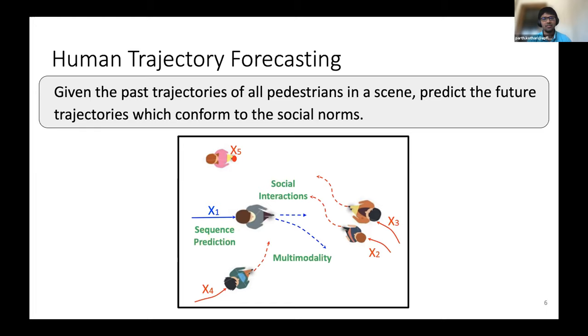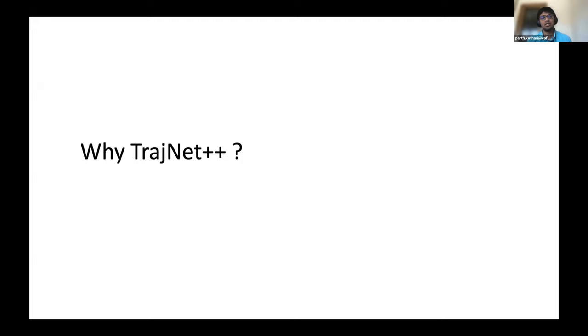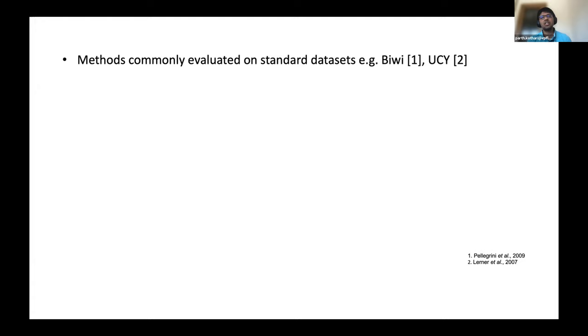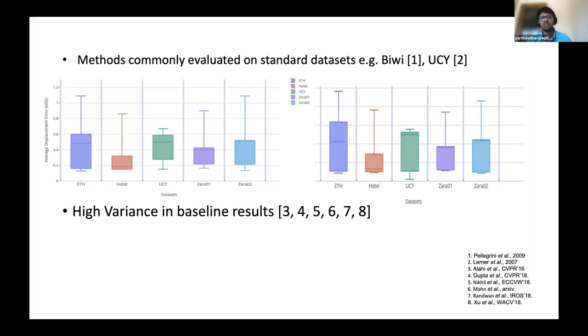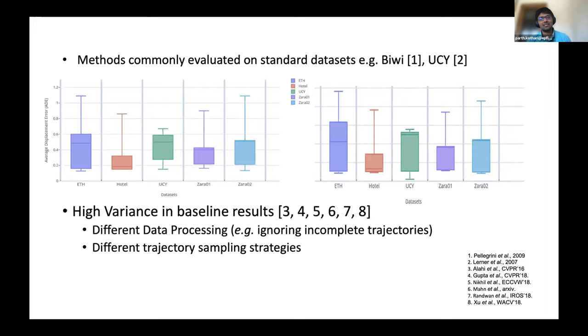So given a human trajectory forecasting model, let's say you have tackled each of these challenges or some of these challenges, the next crucial part is to evaluate these methods. And that is where TrashNet++ comes into the picture as to why do we need TrashNet++ where other human trajectory datasets already exist. So within other human trajectory datasets, the current works usually evaluate on the standard datasets of ETH and UCY. However, if you compare different methods of a simple vanilla LSTM, which is a standard baseline for these works, you see a high variance in the baseline results across various works for the same standard baseline.